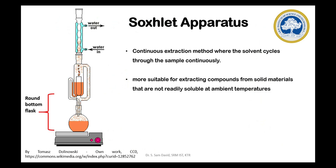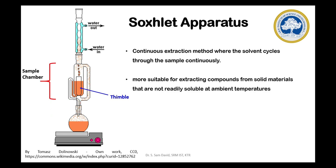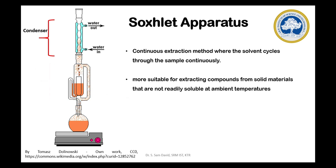A Soxhlet apparatus comprises of three components: a round bottom flask where the solvent will be taken and heated, a sample chamber where the solid sample will be placed for extraction, and a condenser for cooling down the solvent vapors.